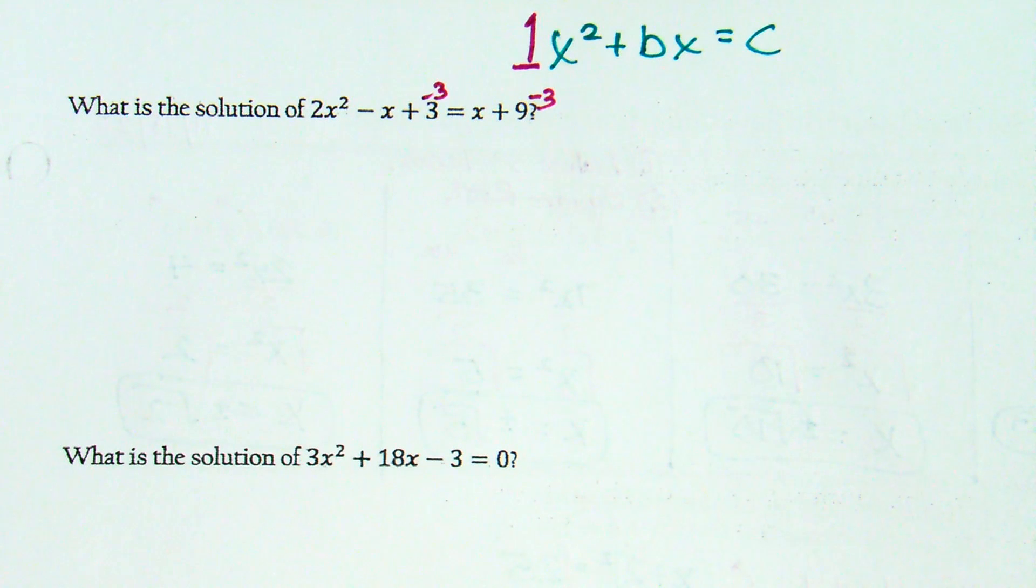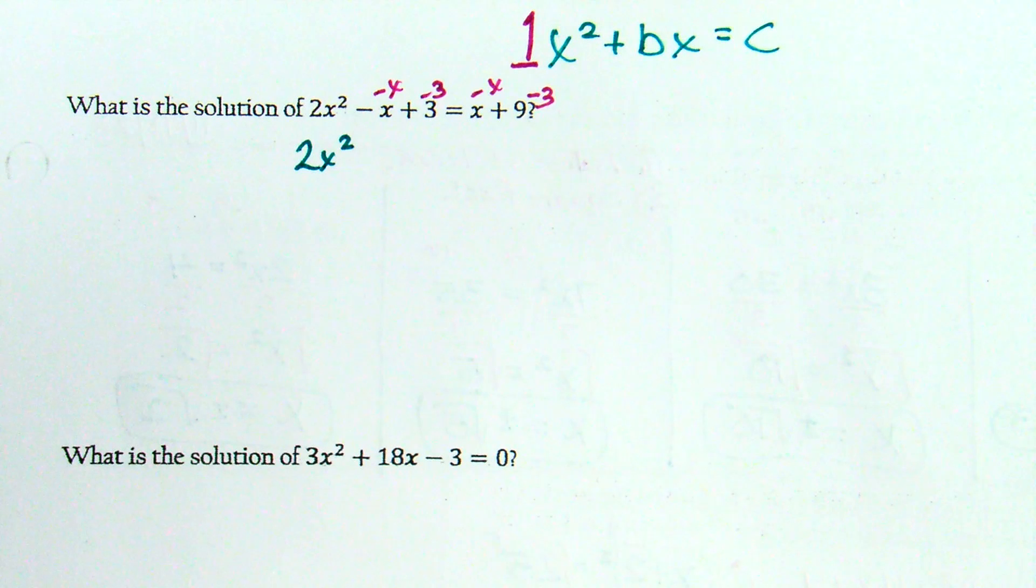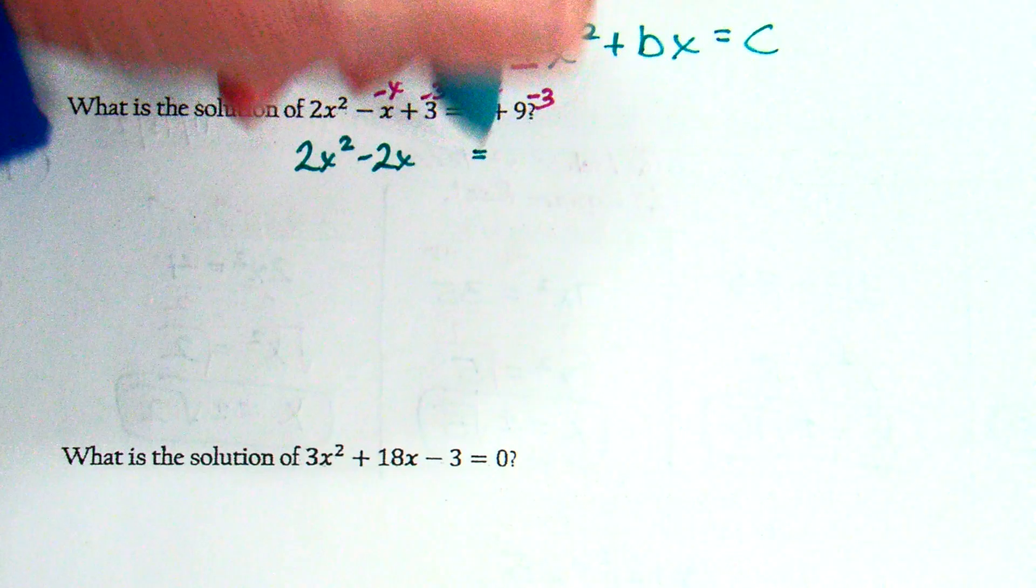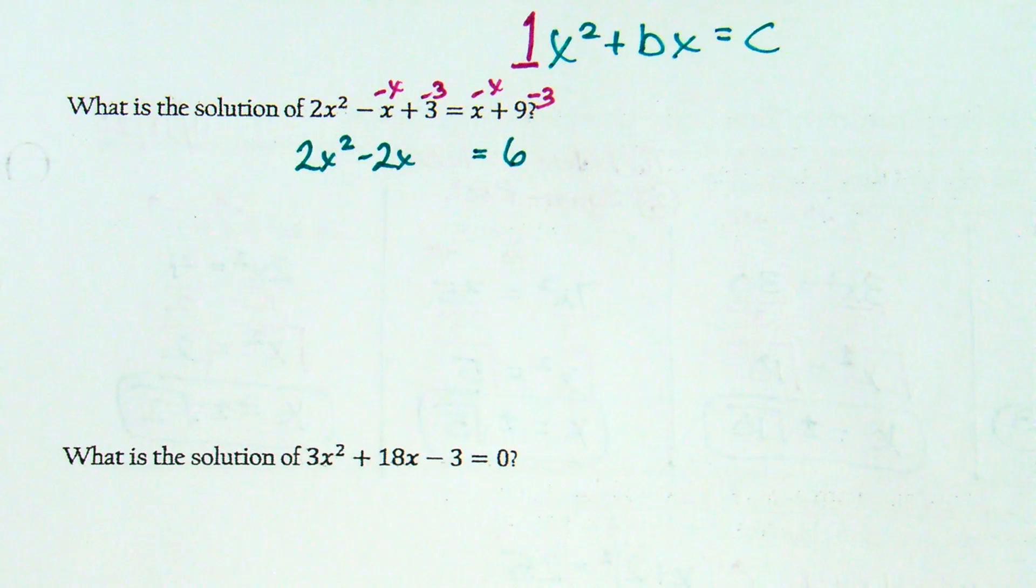Subtract x. So let's clean that up. Have 2x squared minus x minus 2x. 3 minus 3 cancels. Equals x minus x cancels. 9 minus 3, 6. Do I have x squared plus bx equals c? We have ax squared plus bx equals c, right?